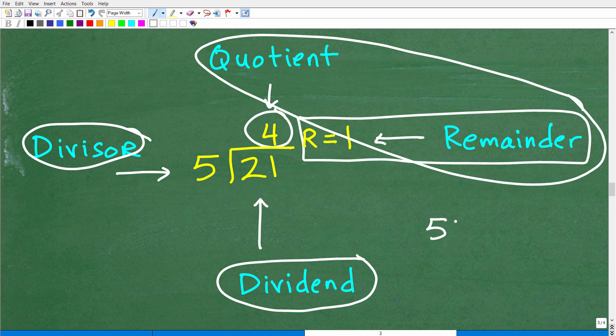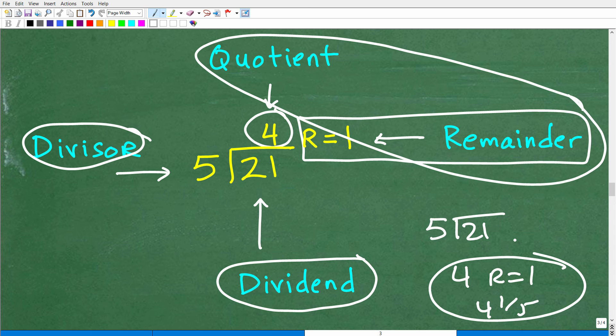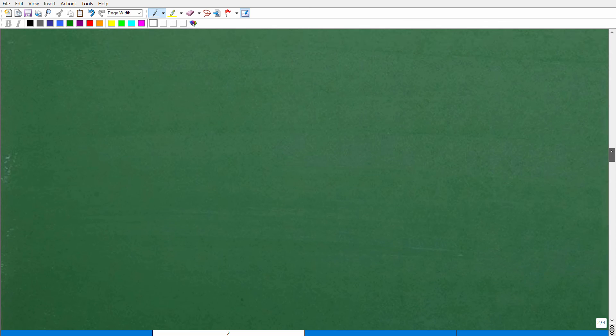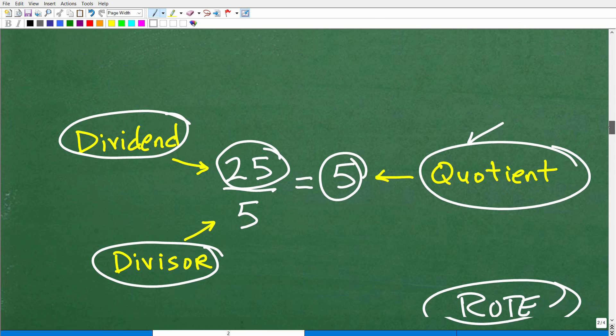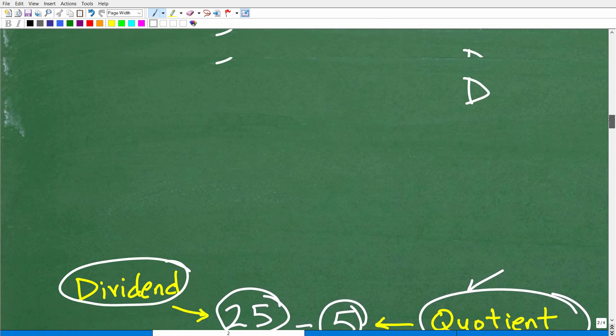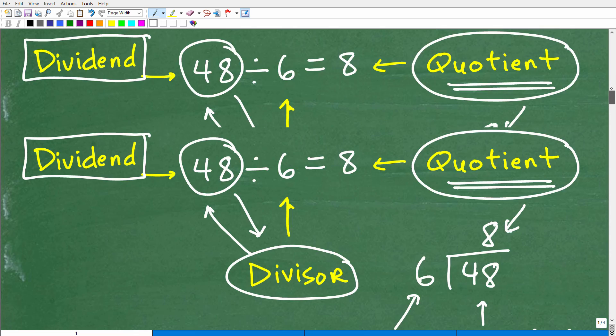So here, if you were asked, 21 divided by 5, what is the answer? Well, the answer is going to be 4, remainder equal 1, or 4 and 1/5. Again, different ways to write that, but it's going to be the quotient and the remainder if you have a remainder. Sometimes you do not have a remainder as we talked about these other problems up here. You just have a simple quotient.